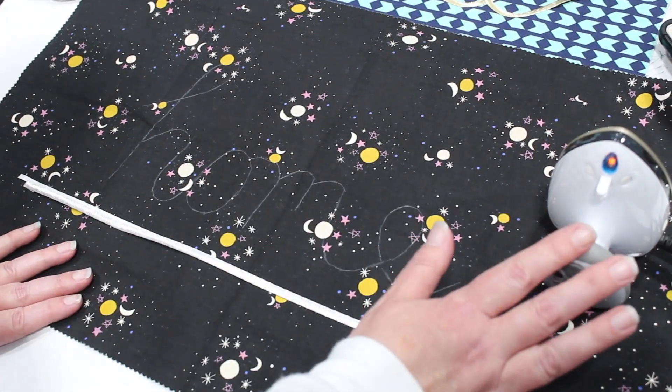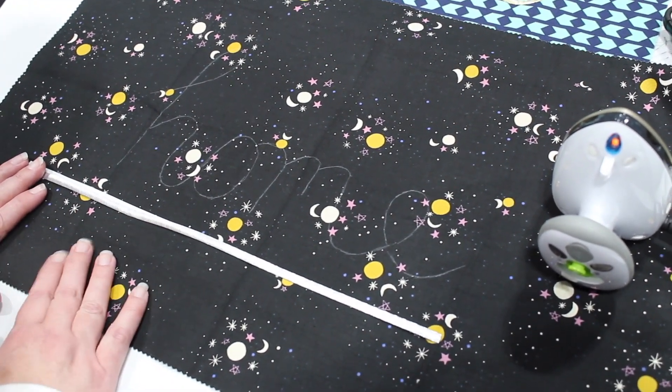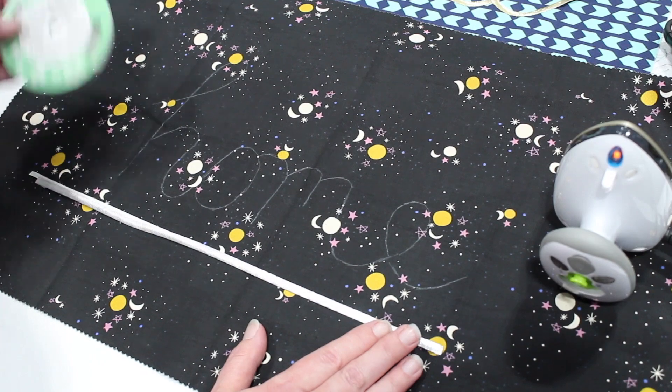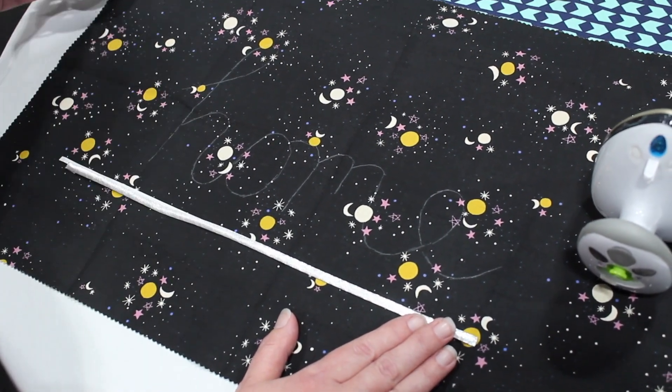First of all, I do use an iron and I do use a fusible bias. You can make your own bias or you can buy this really great Clover product that comes in silver and gold, which is really fun.